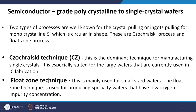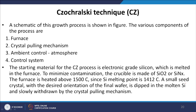The Siemens method produces polycrystalline silicon, but we need single crystal silicon for solar cells. There are two methods for growing single crystal silicon ingots: the Czochralski (CZ) technique and the float zone technique. The CZ technique is the dominant method for manufacturing single crystals and is especially suited for the large wafers used in IC fabrication. The float zone technique is used for smaller wafers, particularly those requiring low oxygen impurity concentrations.